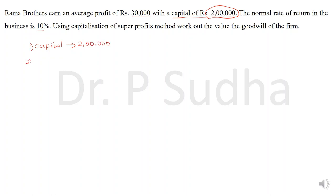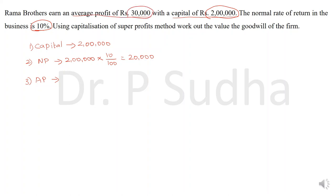The second step: you have to calculate normal profit. It is capital into normal rate of return divided by 100 — 2 lakhs into 10 divided by 100, giving 20,000. After calculating normal profit, the third step is average profit. In this question average profit is given directly as 30,000 rupees.